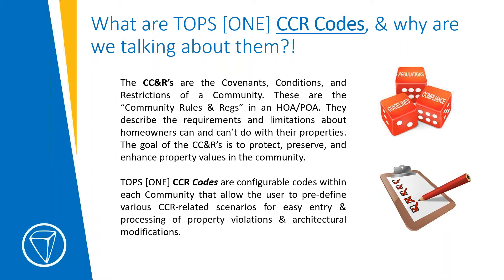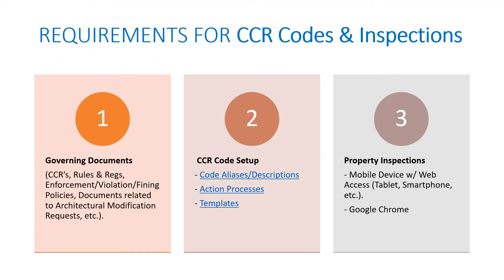The TOPS One CC&R codes allow the user to predefine various CC&R-related scenarios for easy entry and processing of property violations and architectural modifications. You can set up the system to tell you what to do next with any given violation or architectural modification request, based on language in the code from the documents, what the homeowners need to do to correct it, and how that follows a first letter, second letter, third letter, and so on process.